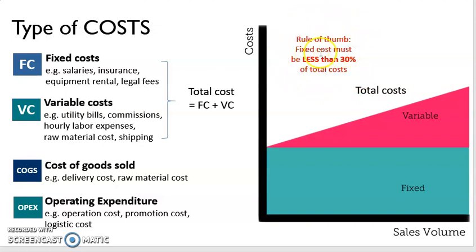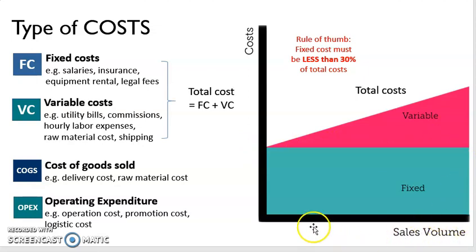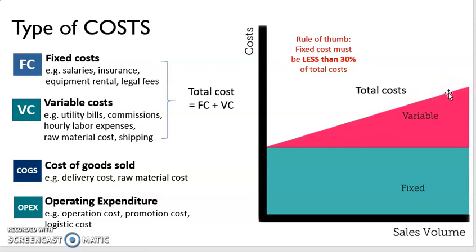There is an important rule of thumb: the fixed cost must be less than 30 percent of the total cost. Looking at this diagram, you can see that the fixed cost is always fixed regardless of the quantity of sales, but the variable cost increases with the quantity of sales — the more you sell, the higher the variable cost. To achieve this rule of thumb, we have to ensure that the sales volume is high so that the variable cost is higher than the fixed cost.